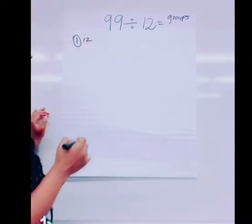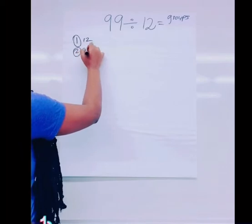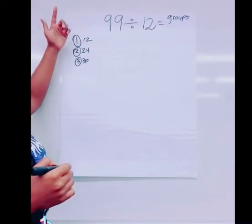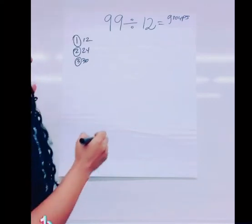One group of 12 is 12. Two groups of 12 is 24 and so forth. If you do not know these numbers, all you're doing is adding 12 each time.